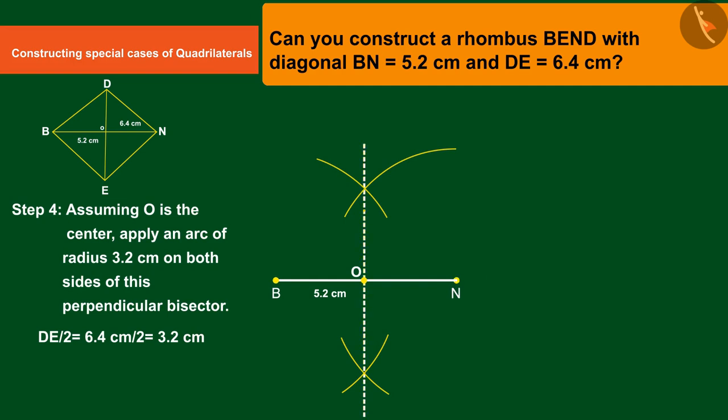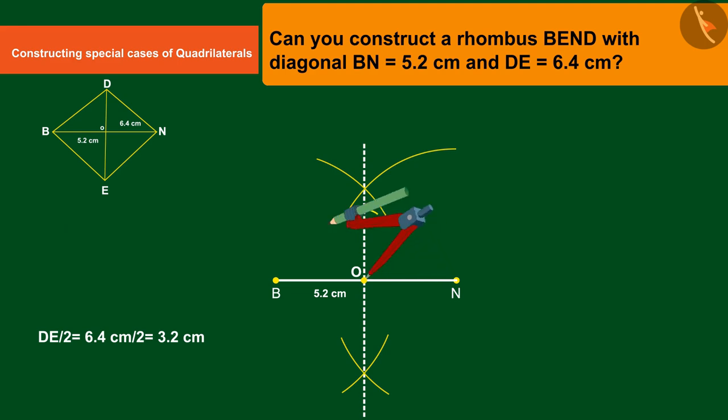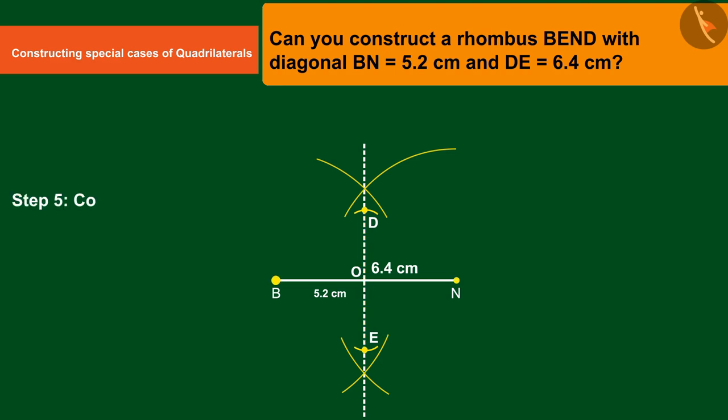Which intersects it at points E and D. Thus we get diagonal DE equal to 6.4 centimeters. Connect the points B-E, points E-N, points N-D.